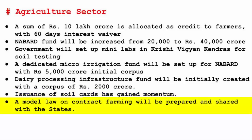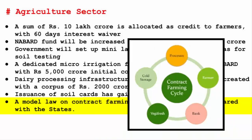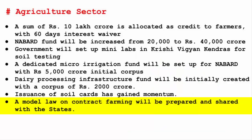A model law on contract farming will be prepared and shared with the states. Contract farming is basically an agreement between a private company and a farmer for the production and supply of agricultural raw materials. Since agriculture in India is somewhat stagnant and needs a boost through private investment, the government is rolling out a law on contract farming, though it has its own critics and disadvantages.